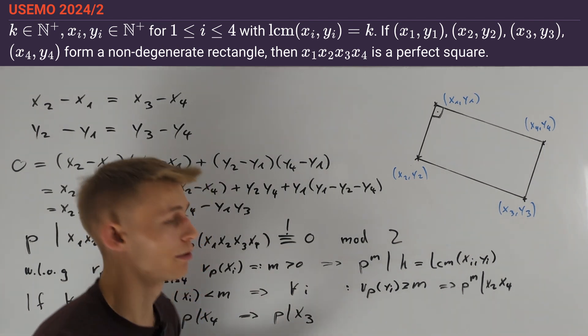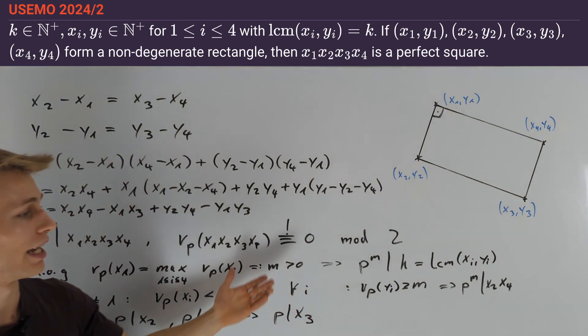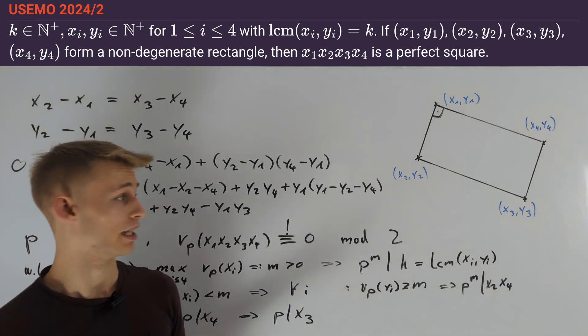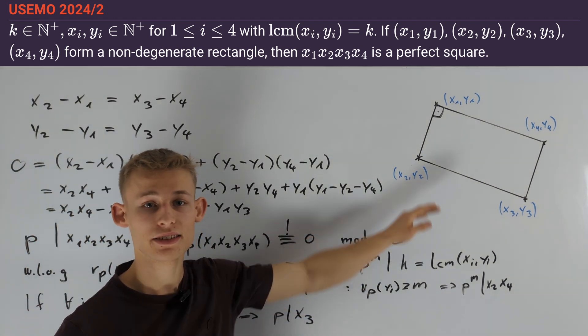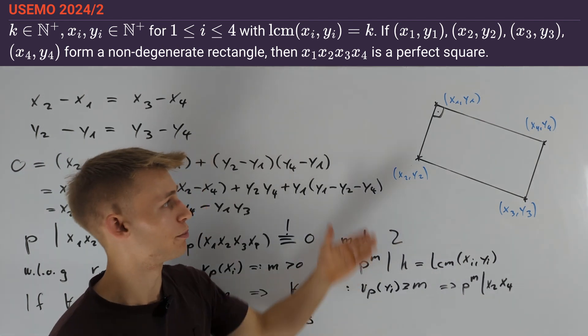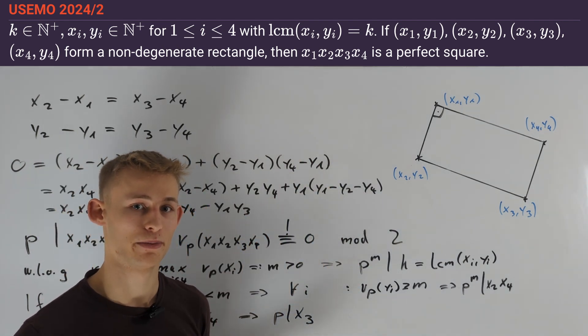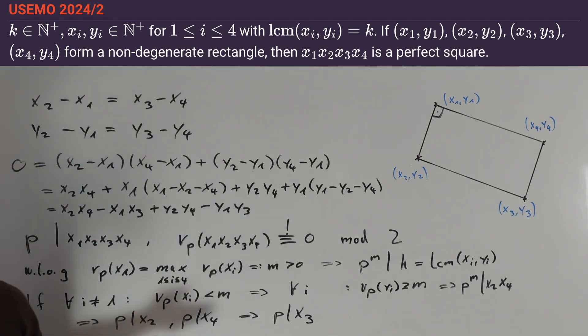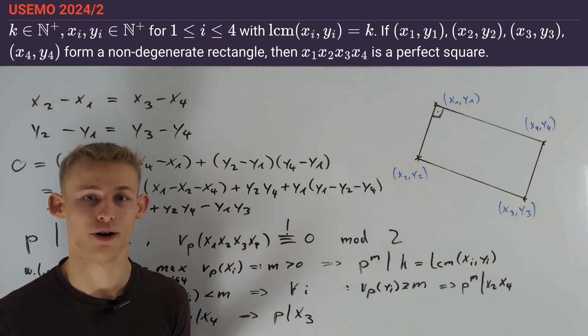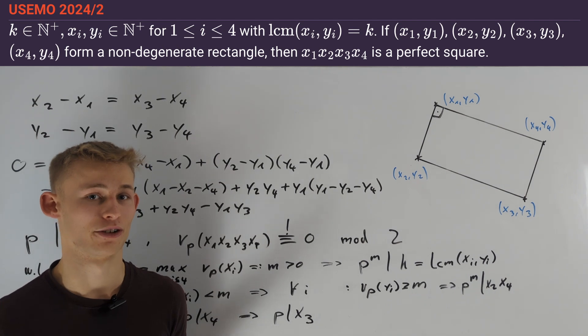In total we figured out that all eight numbers are divisible by p, and therefore we could divide all coordinates by p. This new rectangle satisfies all our previous conditions if we take k/p instead of k. We stay in this case and therefore this process can go on indefinitely, which is a contradiction.